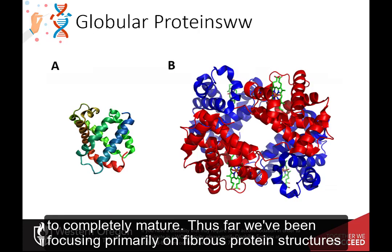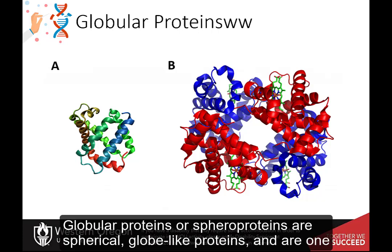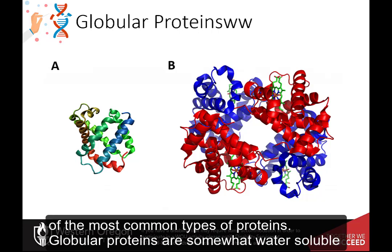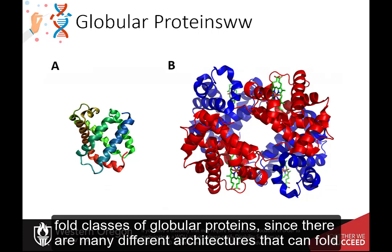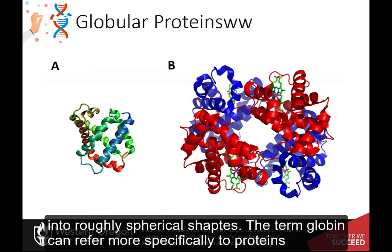Thus far, we've been focusing primarily on fibrous protein structures. Globular proteins, or spheroproteins, are spherical, globe-like proteins and are one of the most common types of proteins. Globular proteins are somewhat water-soluble, forming colloids in water. Unlike fibrous or membrane proteins, there are multiple fold classes of globular proteins since there are many different architectures that can fold into roughly spherical shapes.